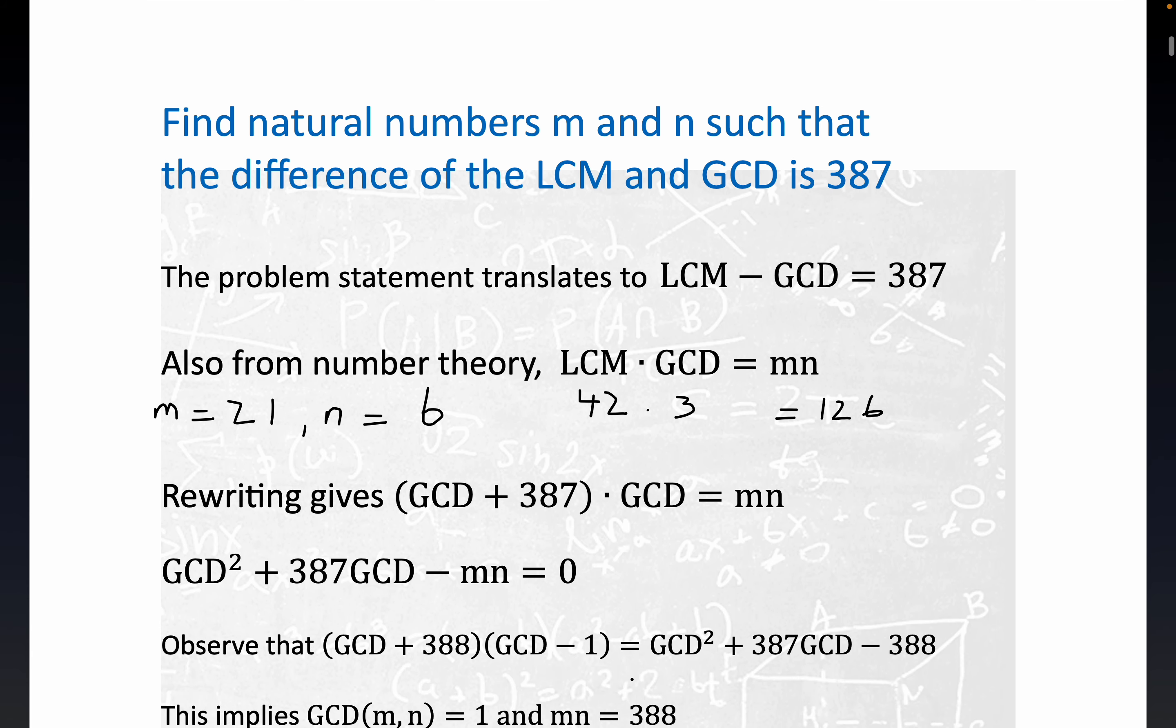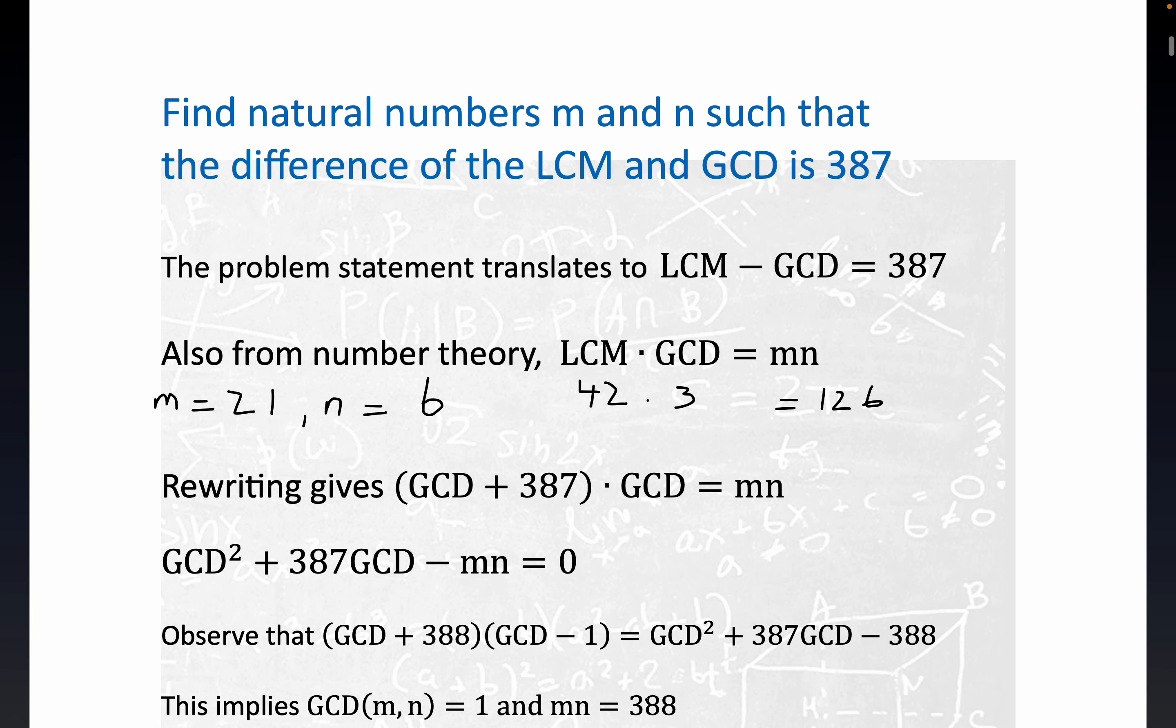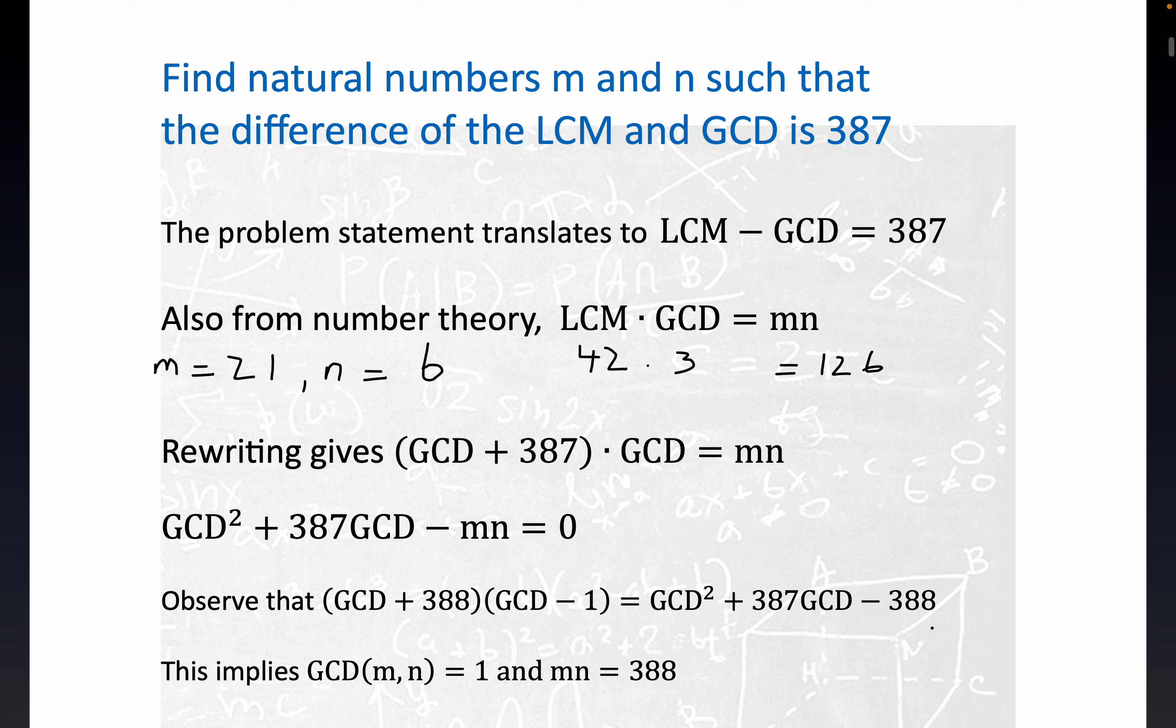One factorization right here is to split it up into these linear factors. Since 388 minus 1 is 387, we get this factorization: (GCD plus 388) times (GCD minus 1) equals GCD squared plus 387 GCD minus 388 equals zero. The whole thing equals zero.